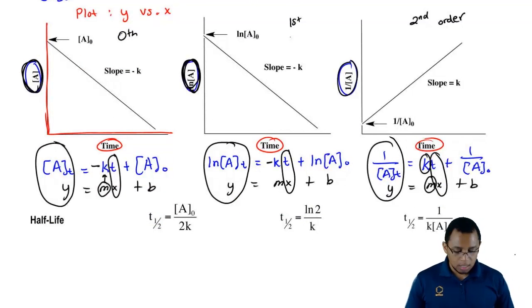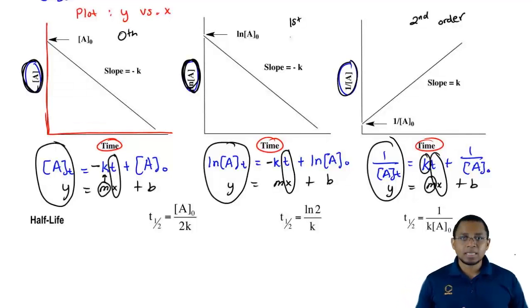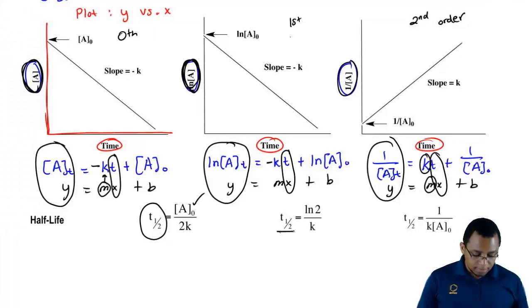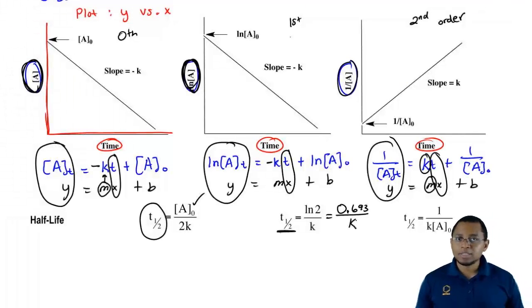Finally, first order, zeroth order, second order, they each have what we call a half-life equation. Half-life is basically the time it takes for about half of a substance to decompose over a period of time. For zeroth order, half-life equals the initial concentration of my reactant divided by 2K. For first, it is half-life equals ln2 over K. Remember, ln2 is the same thing as 0.693 over K. Then finally, half-life of a second order is 1 over K times the initial concentration.